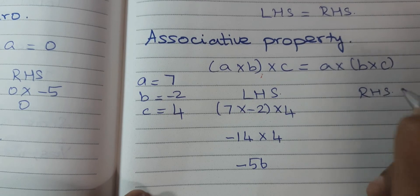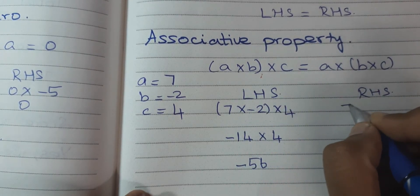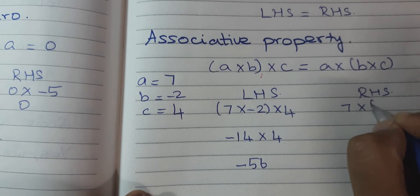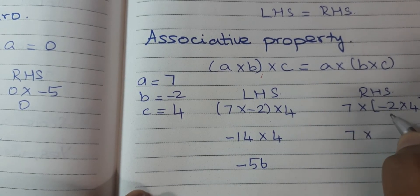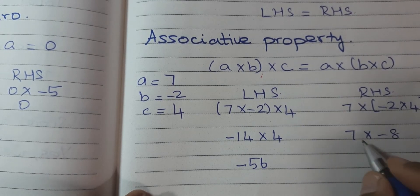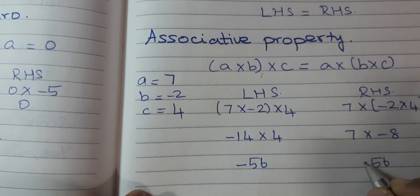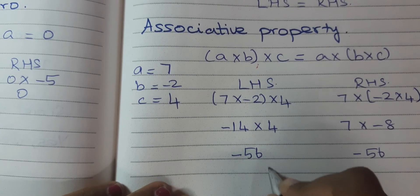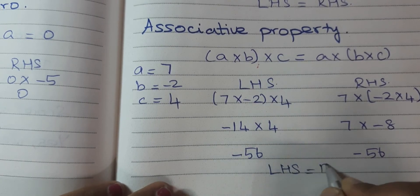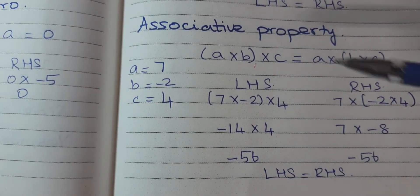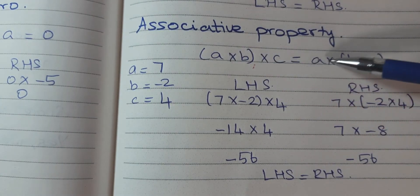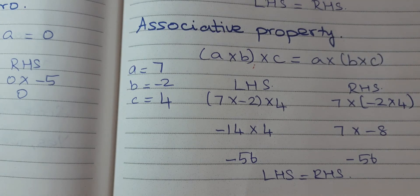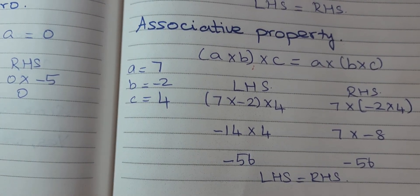RHS: A × (B × C) = 7 × ((−2) × 4) = 7 × (−8) = −56. Again LHS equals RHS. So the condition A × (B × C) = (A × B) × C is satisfied.